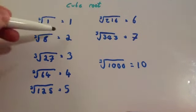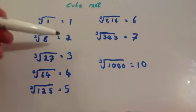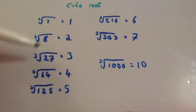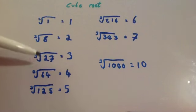The cube root of 1 is 1, because 1 times 1 times 1 is 1. The cube root of 8 is 2, because 2 times 2 times 2 is 8. The cube root of 27 is 3, because 3 times 3 times 3 is 27.